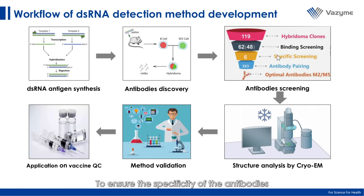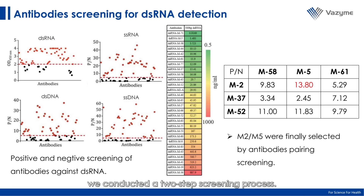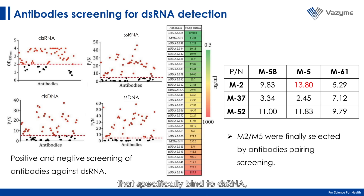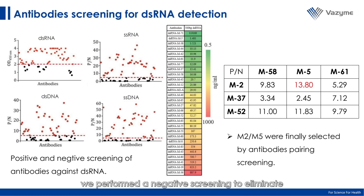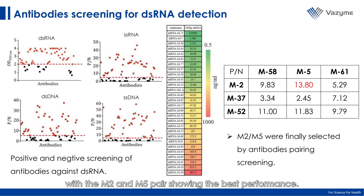To ensure the specificity of the antibodies to the dsRNA antigen and avoid any interference from other nucleic acids, we conducted a two-step screening process. The first round was a positive screening to find antibodies that specifically bind to dsRNA, resulting in 62 candidates. In the second round, we performed a negative screening to eliminate any antibodies that could bind to either ssRNA, double-strand DNA, or single-strand DNA. This thorough process narrowed it down to six antibodies, with the M2-M5 pair showing the best performance.